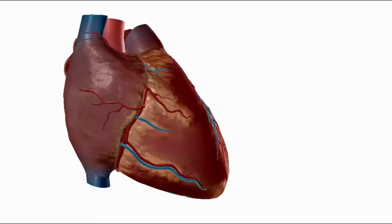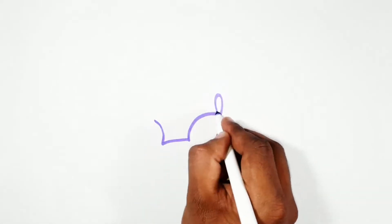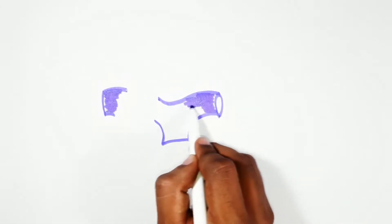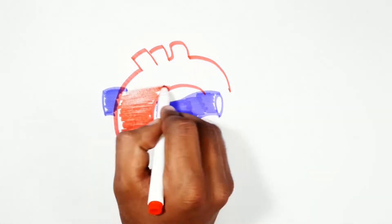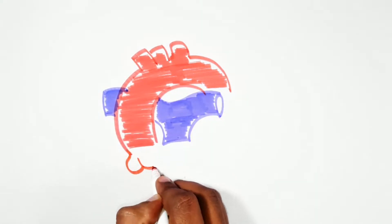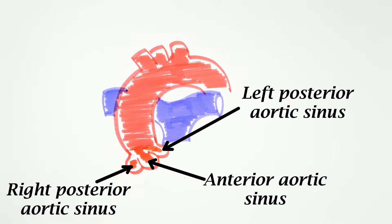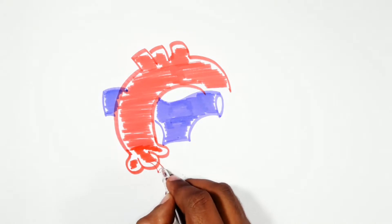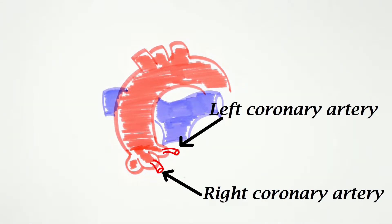They arise from the coronary sinuses. Immediately above the aortic orifice, the wall of the ascending aorta bulges to form the aortic sinuses. There are three aortic sinuses: anterior, left posterior, and right posterior. The right coronary artery arises from the anterior aortic sinus.